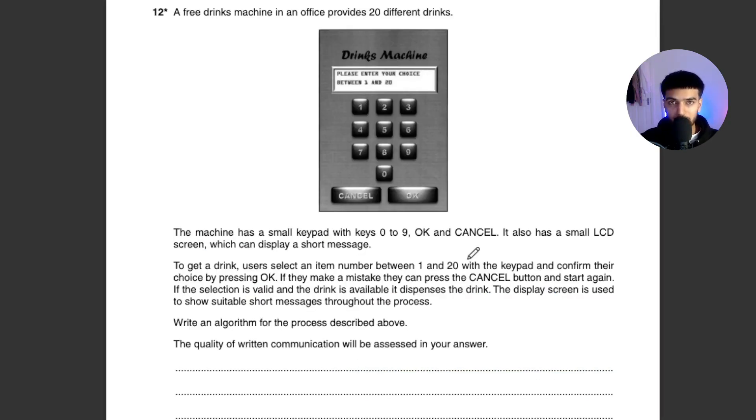Now here's the last question I want to go over. All of these questions you can write in pseudocode or Python or any high level language you want. A free drinks machine provides 20 different drinks. To get the drink, users select an item between zero and 20 and then press OK and it'll be dispensed. Or if they make a mistake you can press cancel and it will start again. This question does not give you like a bullet point of what you need to do; you need to kind of think about the steps required.